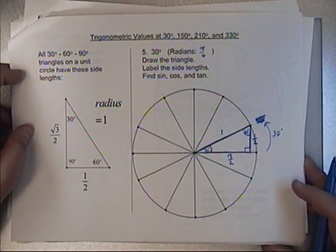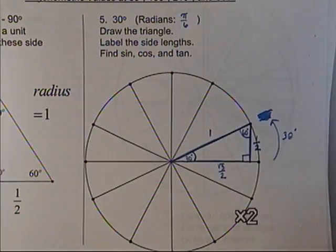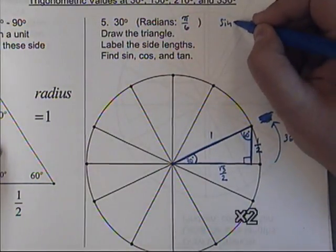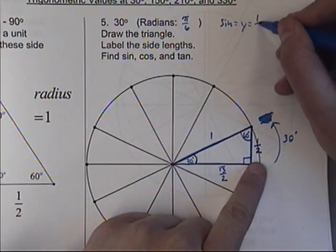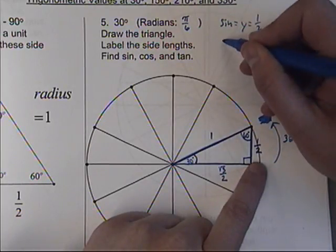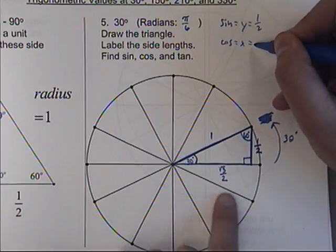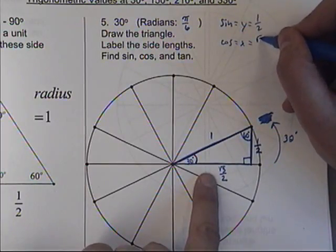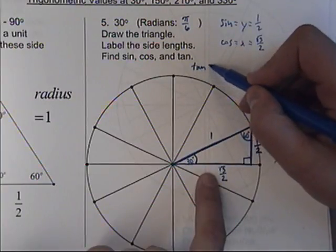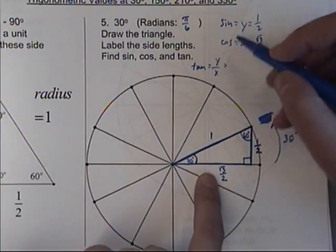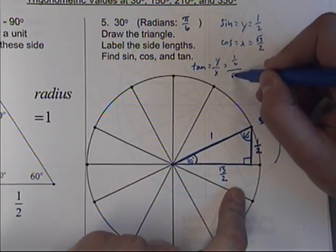So if I want to find my sine, cosine, and tangent: sine is your y value, which is your vertical side here, because y is up and down — 1 half. Cosine is x, which is your horizontal side, which is positive square root of 3 over 2. And tangent is going to be y divided by x, which is 1 half divided by square root of 3 over 2.